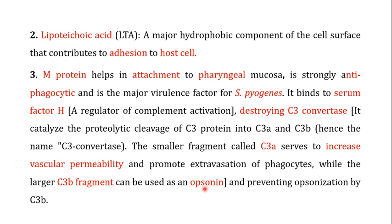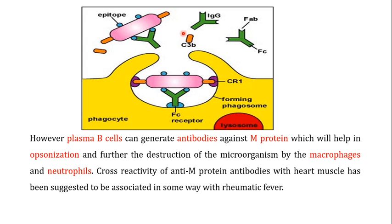Opsonins are molecules that increase phagocytosis by phagocyte cells. What M protein does, when it destroys C3 convertase, is that C3b fragment cannot be formed — meaning you cannot use an opsonin and cannot increase the phagocytic affinity of phagocytes towards S. pyogenes, thereby preventing opsonization by C3b. Normally, when C3b is present, it binds to the surface of S. pyogenes, increasing the affinity of phagocytes for S. pyogenes and helping in phagocytosis. But when C3b is not formed due to destruction of C3 convertase, that increased phagocytic affinity is no longer present.